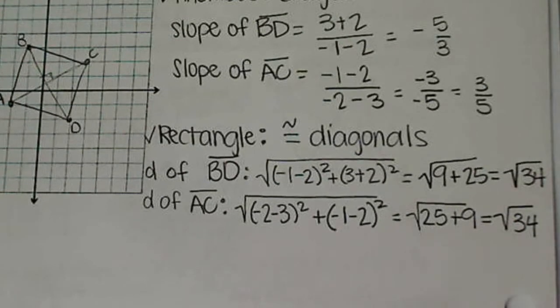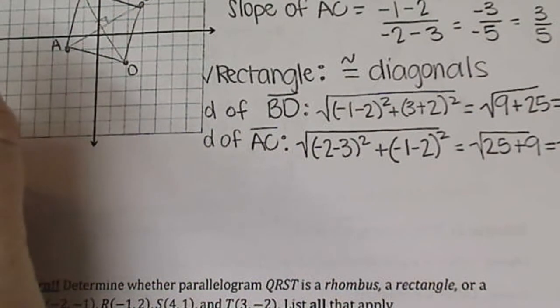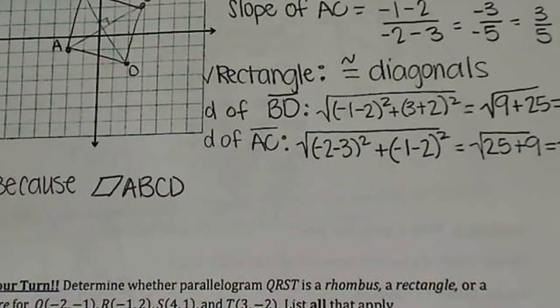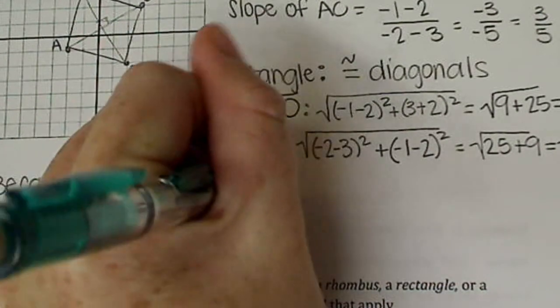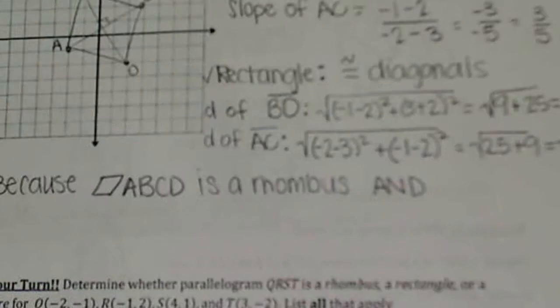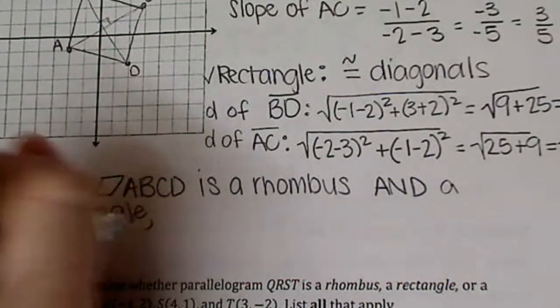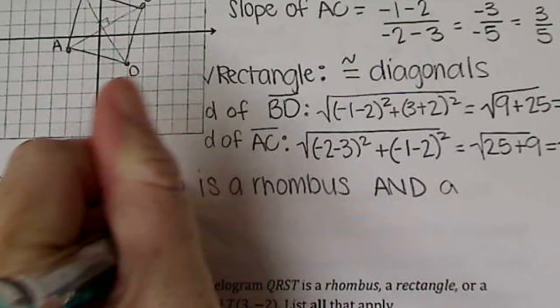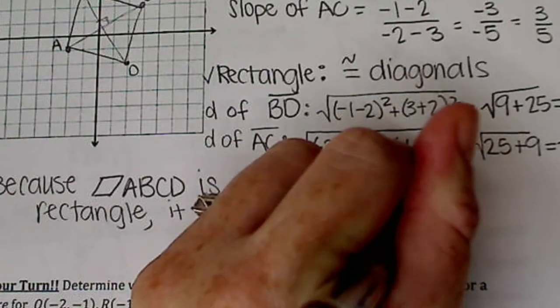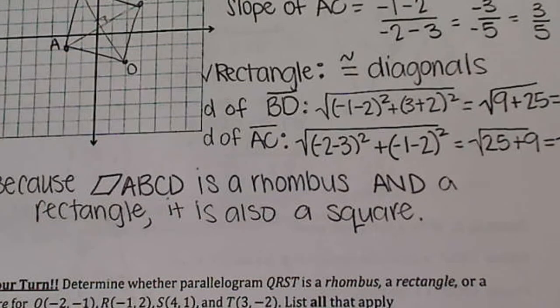So since it's a rhombus and a rectangle, what does that mean? Well, it means that because parallelogram ABCD is a rhombus and a rectangle, it is also a square. It happens to be all three and you need to state that in your own words.